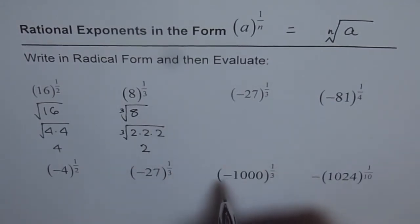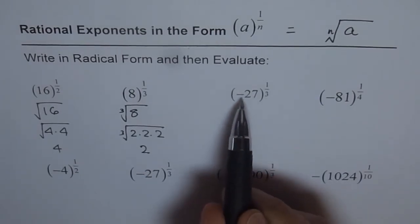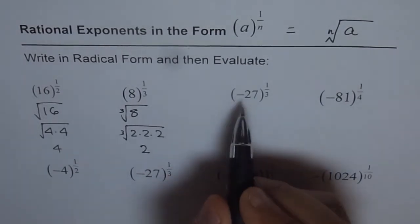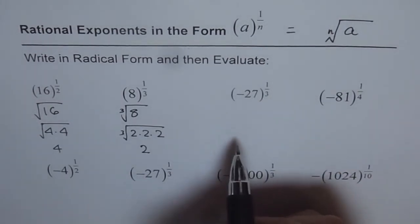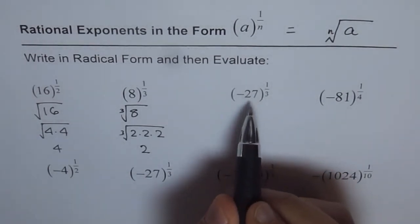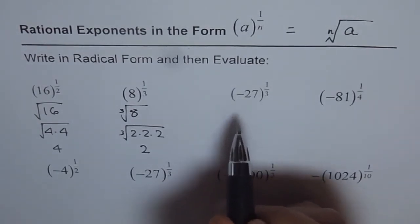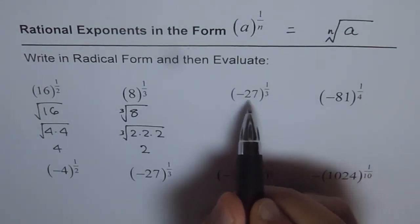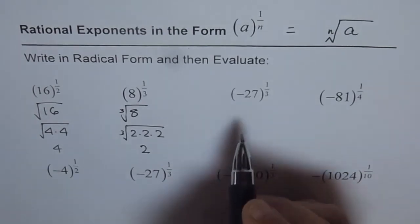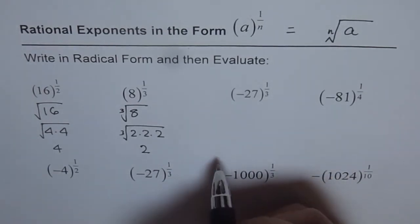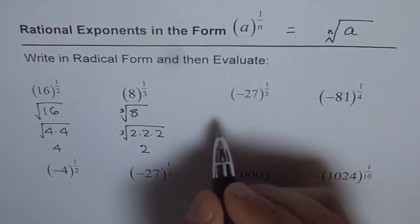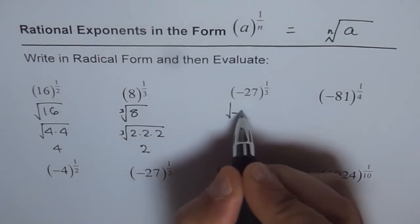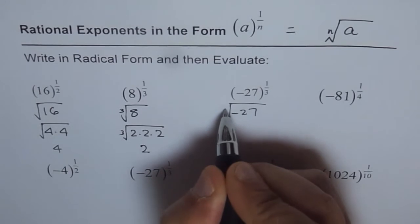Now, this example is different. We have a negative number here, minus 27. Cube root of minus 27 means we are looking for one number which, when multiplied by itself 3 times, gives us minus 27. Well, that number is minus 3. But let me first write this in radical form. In radical form, I will write it as minus 27 cube root.